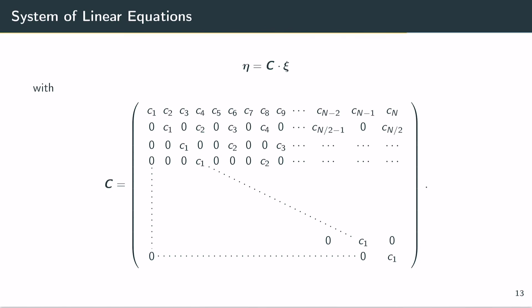In matrix form this can be given by eta equals c times xi. The matrix C has a very nice form in the sense that it's a triangular matrix with sparse entries. The diagonal entries c1 are all non-negative, which means that the matrix is invertible and we have a unique solution for xi.